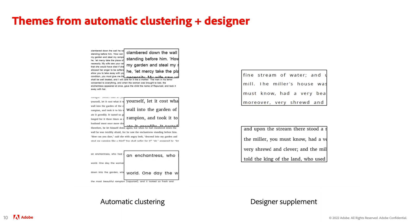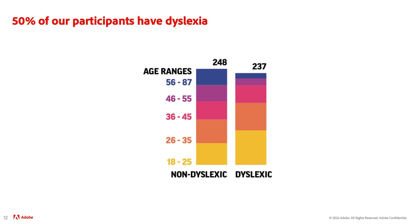Designers then reviewed these generated reading themes and added additional themes to incorporate their design considerations. In each iteration, we invite a new cohort of 100 participants to increase the user needs we sample, and we make sure to include 50% of readers with dyslexia in our design iterations to ensure that their needs were also adequately met.